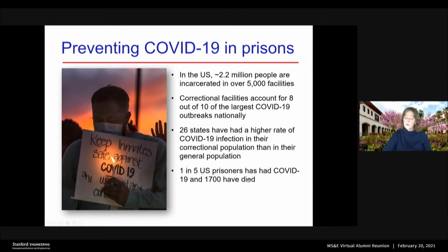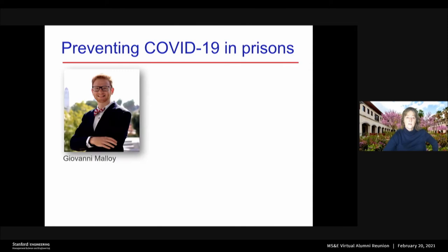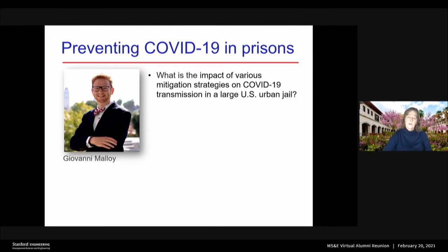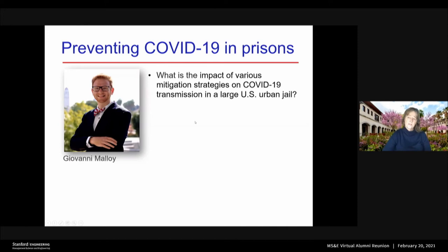Correctional facilities account for eight of the 10 largest COVID-19 outbreaks nationally, surpassing nursing homes and food processing plants. In 26 states, the rate of COVID infection is higher in correctional populations than in the general population. As of just this week, one in five US prisoners has had COVID-19 and 1,700 have died. We collaborated with colleagues at Yale University School of Medicine — this work spearheaded by my doctoral student Giovanni Molloy — to investigate what is the impact of various mitigation strategies on COVID-19 transmission in a large US urban jail. We worked with Cook County Jail in Chicago, Illinois, one of the largest jails in the United States, with about 6,100 detainees at any point in time and approximately 100,000 detainees passing through in any one year.